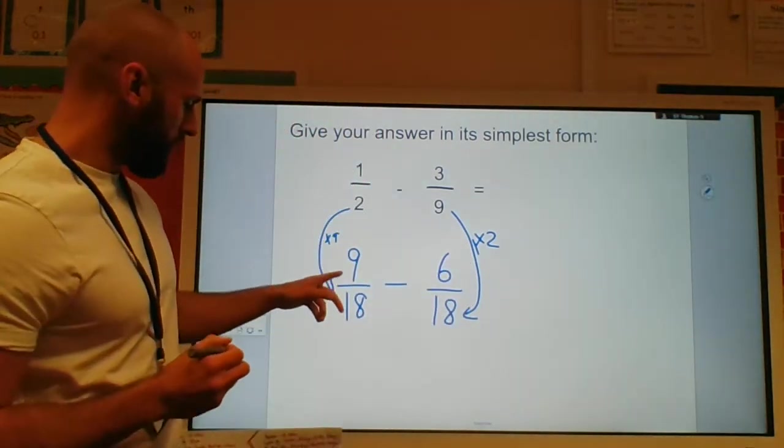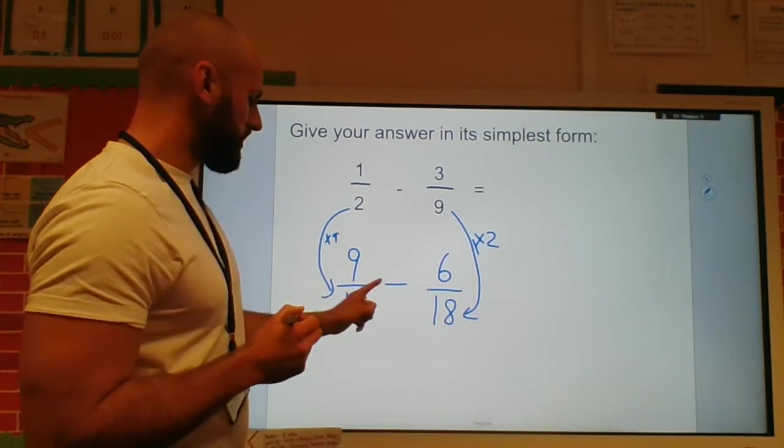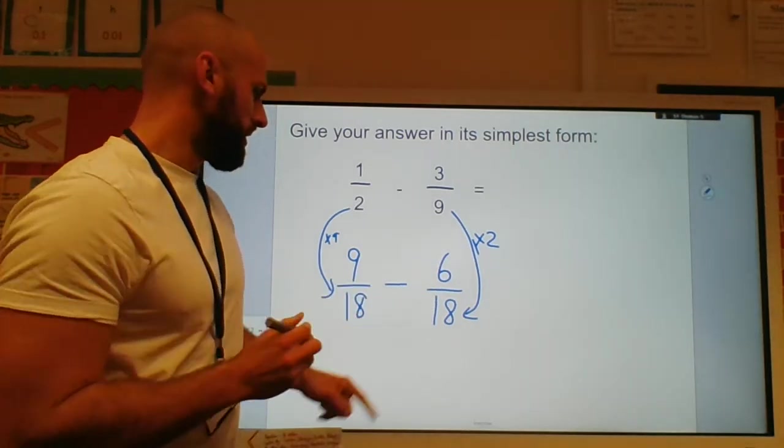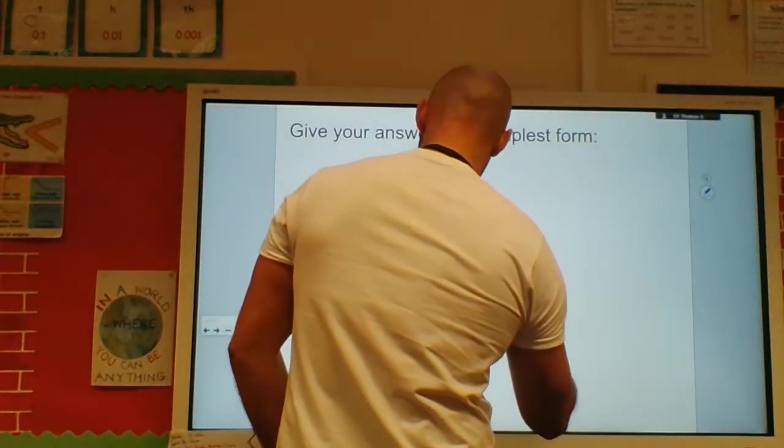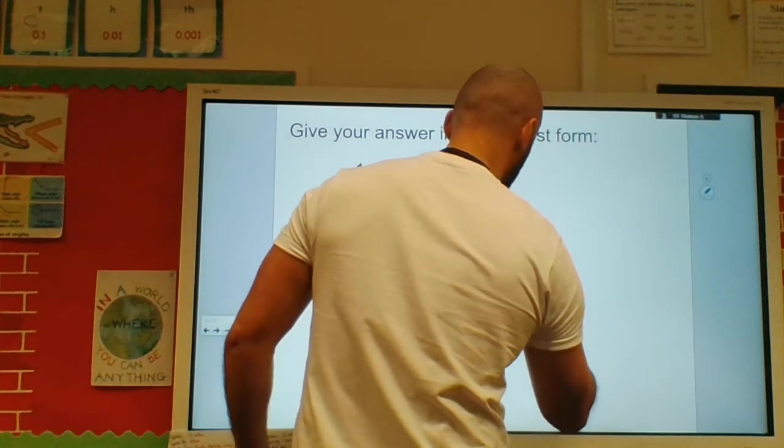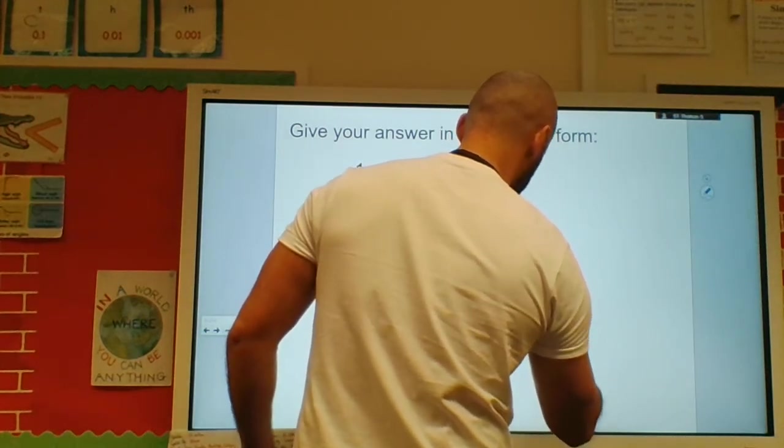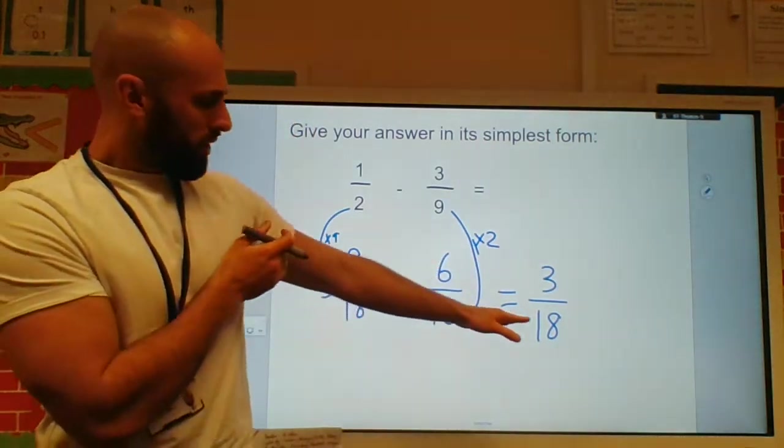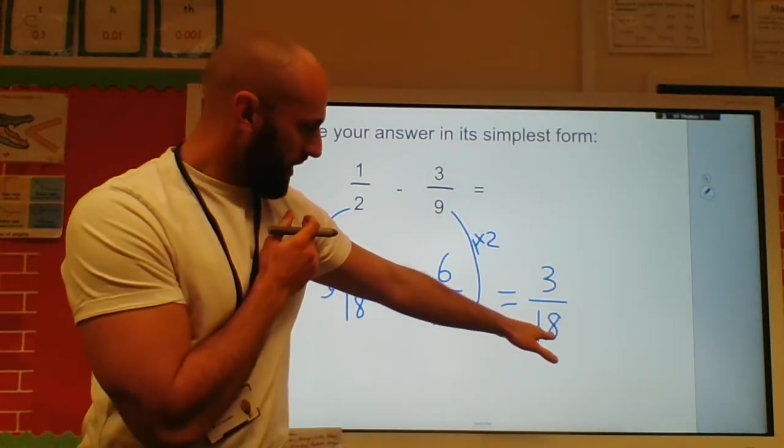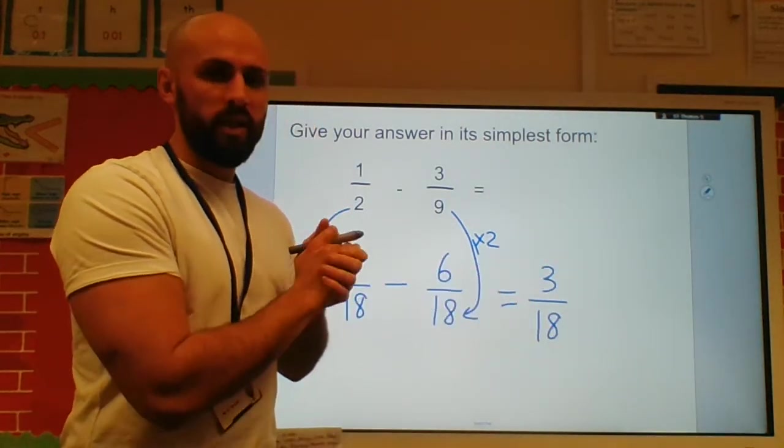Nine times by two gave me eighteen. Three times by two gives me six. So now I've got nine eighteens take away six eighteens. My answer will be three eighteens. And now I think, what common factor do three and eighteen share?